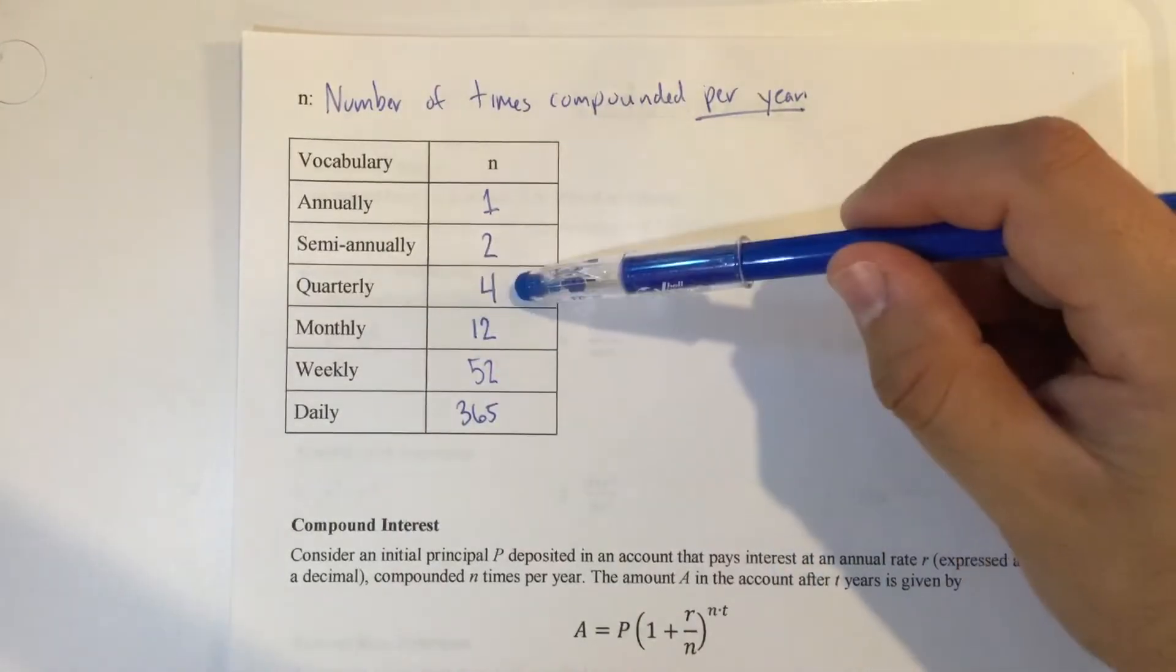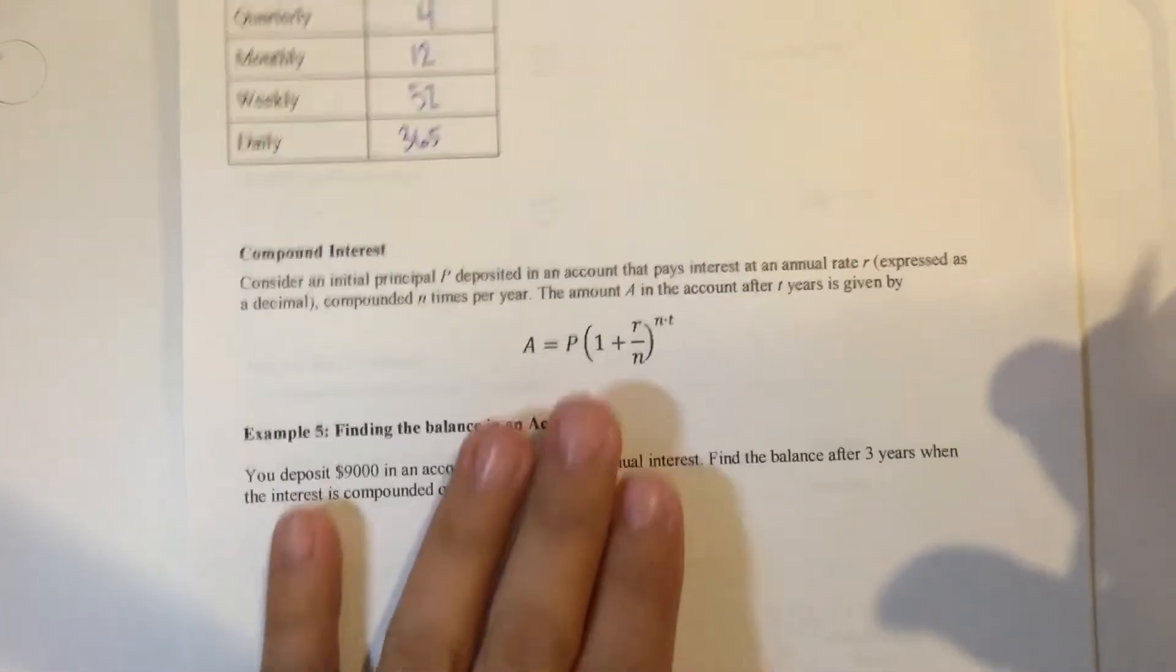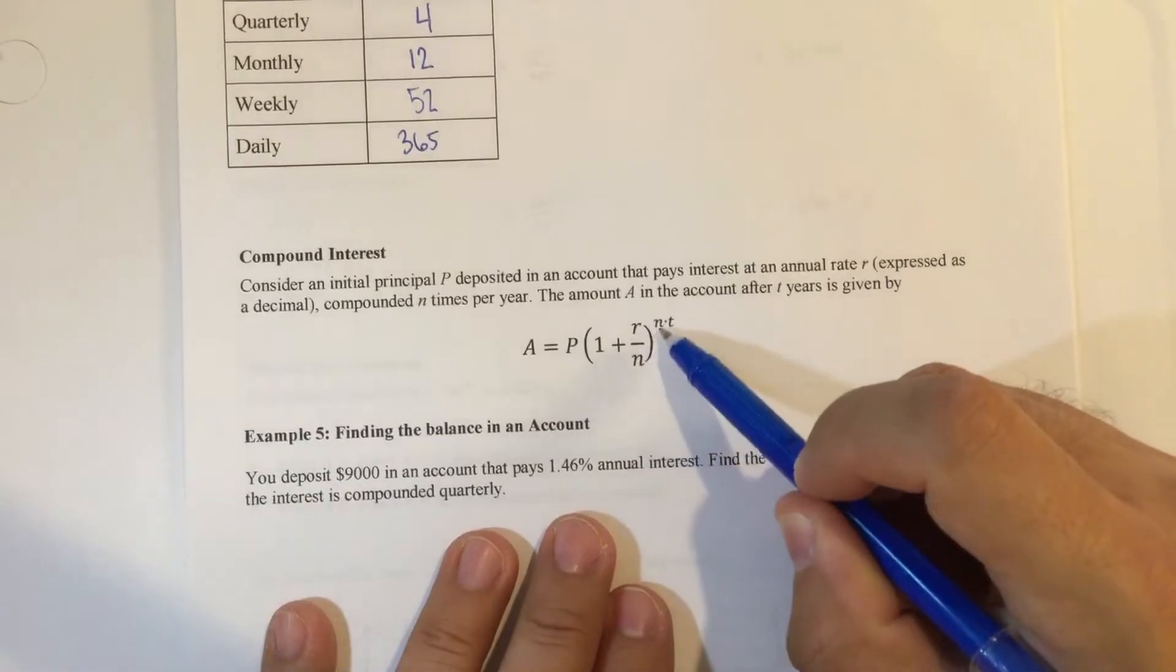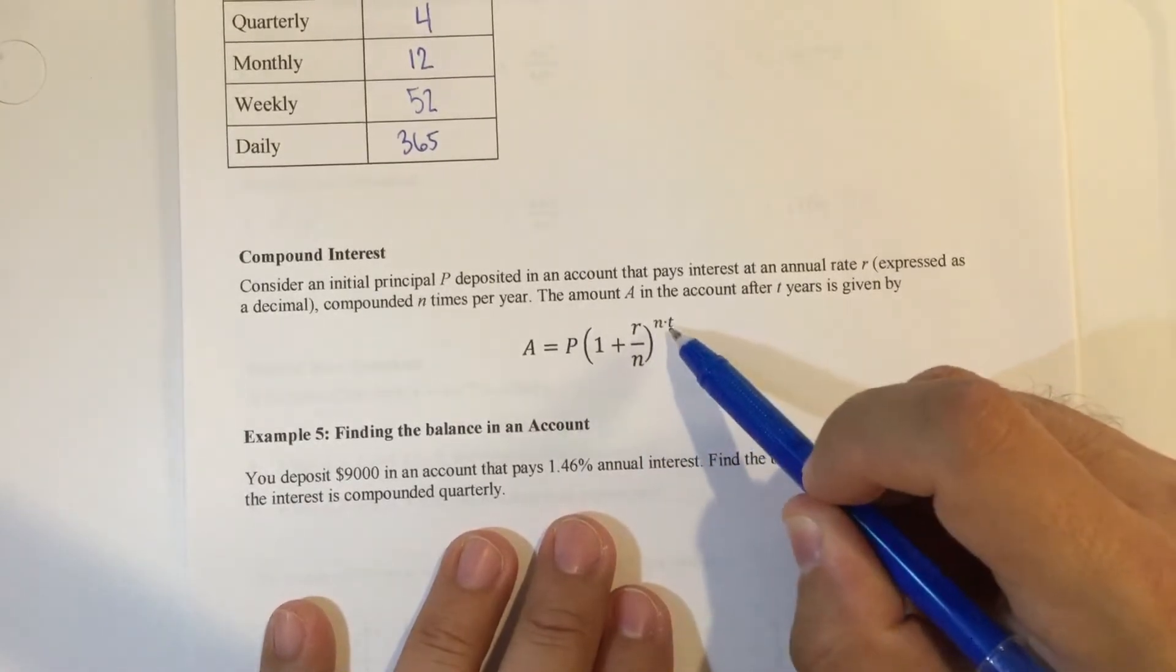If it said quarterly, I know N is four. But now you're going to notice that N is in two places. N is here and N is here. And last we have T for time.